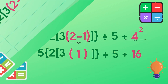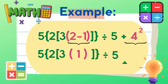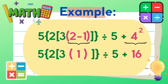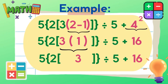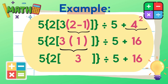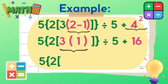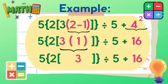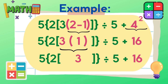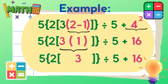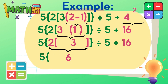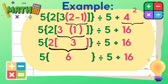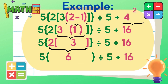Now, let's simplify the square of 4, and the answer is 16. After that, let's perform the operation inside the brackets. So 3 times 1 is equal to 3. Now, the operation inside the braces: 2 times 3 is equal to 6. We are all done with all the operations inside the grouping symbols.